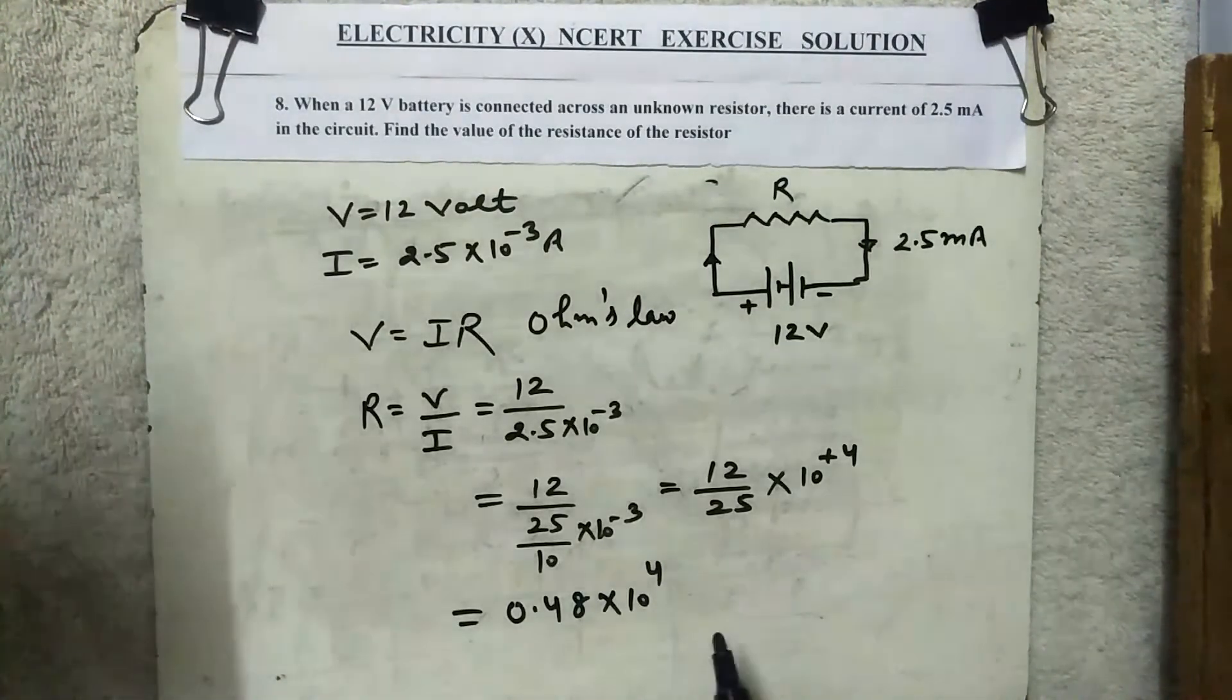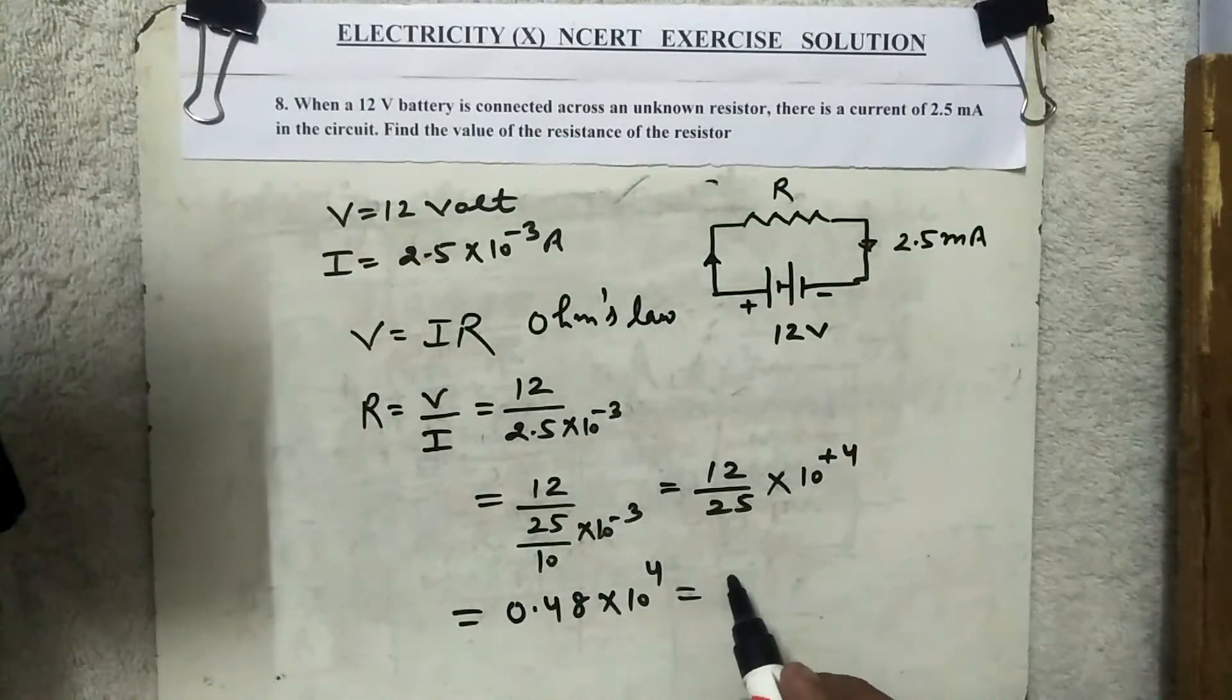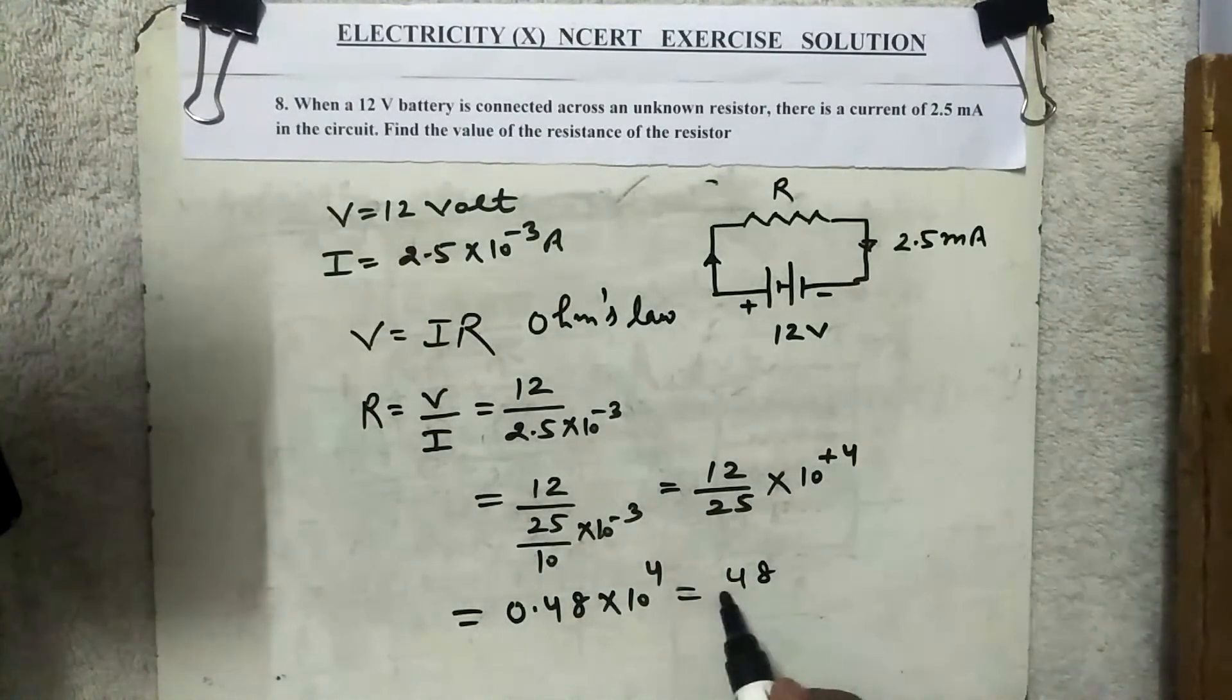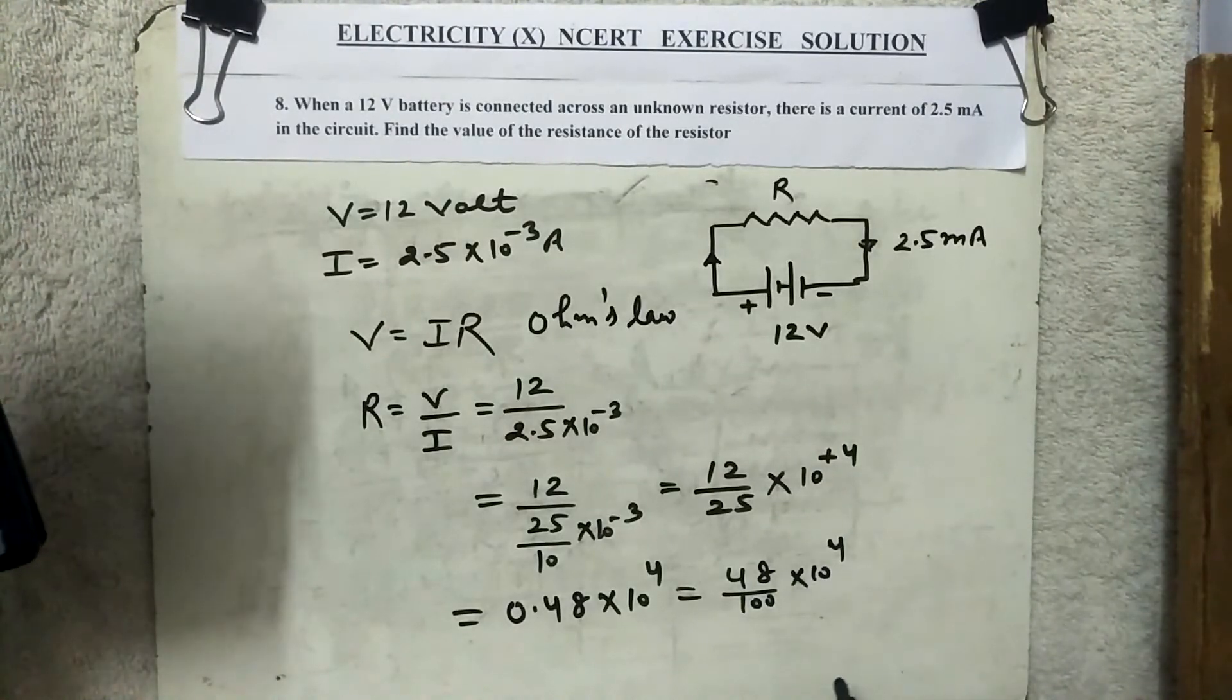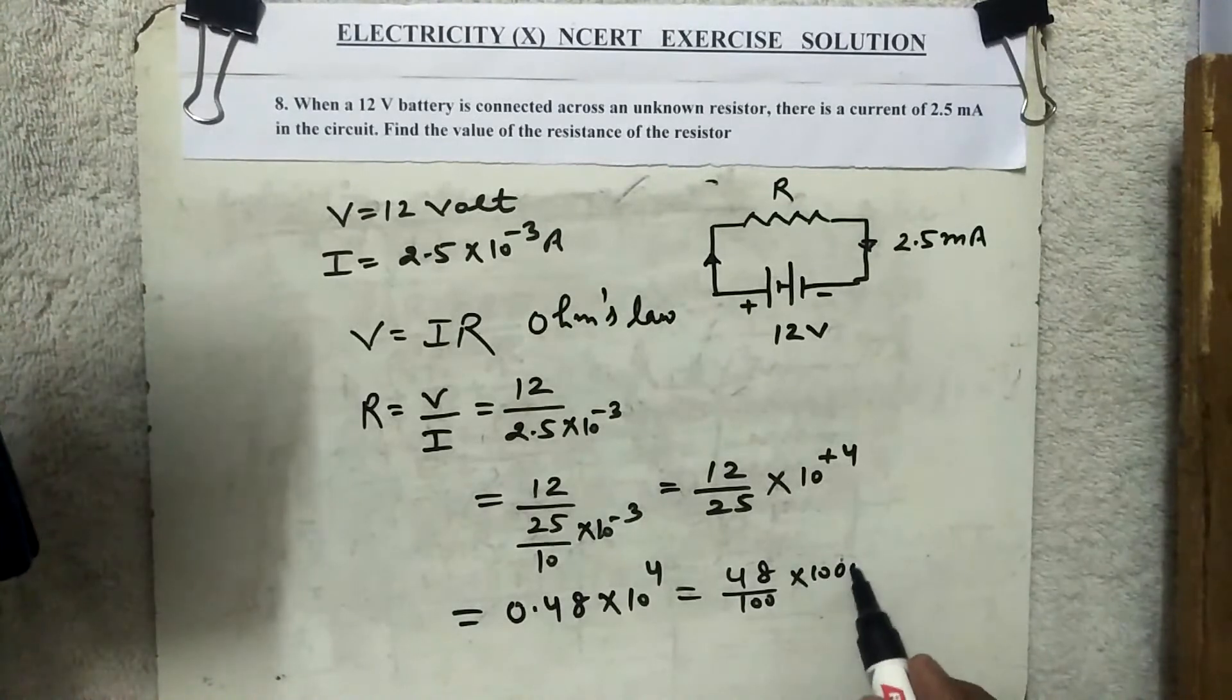Up to here it's clear. Now let's solve this further. Here how much will come? 48 divided by 100 into 10 raised to power 4. Okay, now this 10 raised to power 4, what can we do? Two zeros get cancelled.